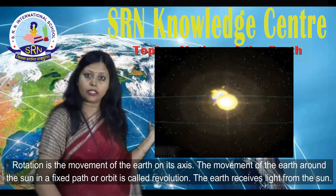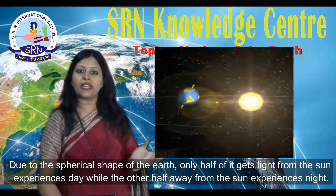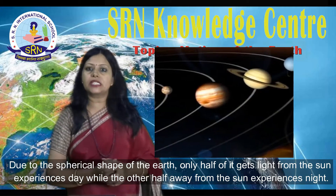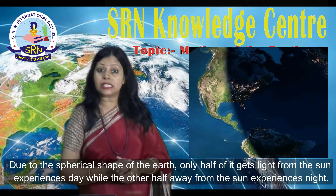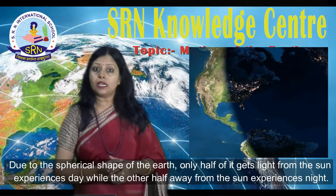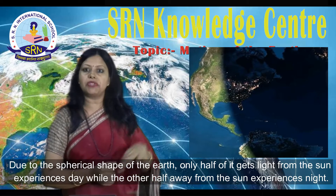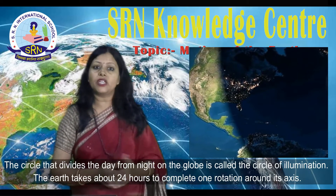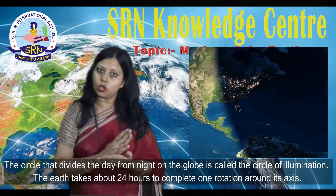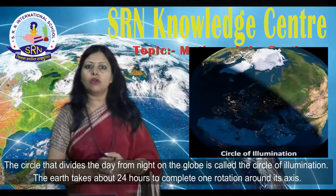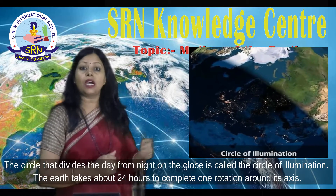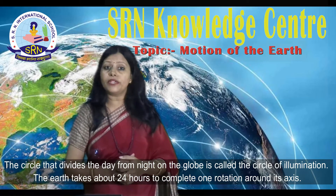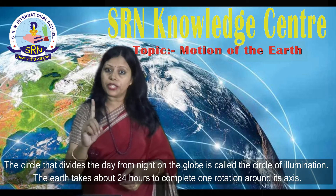The Earth receives light from the Sun. Due to the spherical shape of the Earth, only half of it gets light from the Sun and experiences day, while the other half, away from the Sun, experiences night. The circle that divides the day from night on the globe is called the circle of illumination.